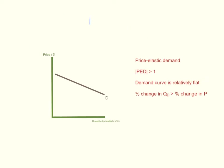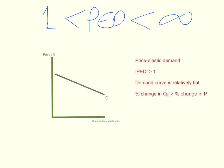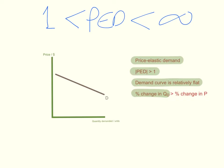When price elasticity of demand is less than infinity but still greater than 1, economists would say that this product has price elastic demand. The absolute value of price elasticity of demand will be greater than 1, and the demand curve would be relatively flat — not quite steep, but also not completely horizontal. This happens when the percentage change in quantity demanded exceeds the percentage change in price. Here we would say that demand is price elastic — quite sensitive to changes in price, but not infinitely sensitive. Demand is not perfectly elastic, it is just price elastic.